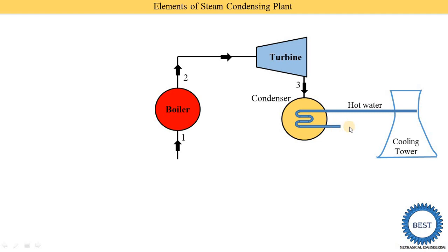Cold water enters and its temperature increases, so it is converted into hot water. This hot water is again cooled in the cooling towers. Here we spray the hot water, and it is cooled by the air.